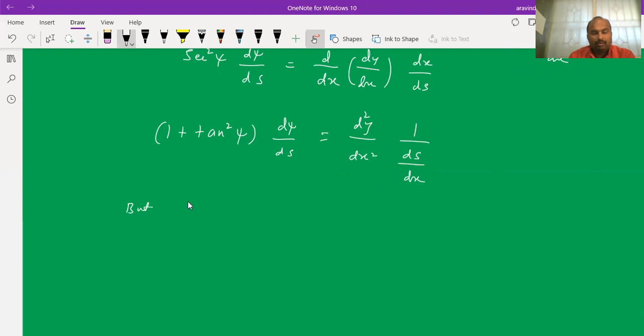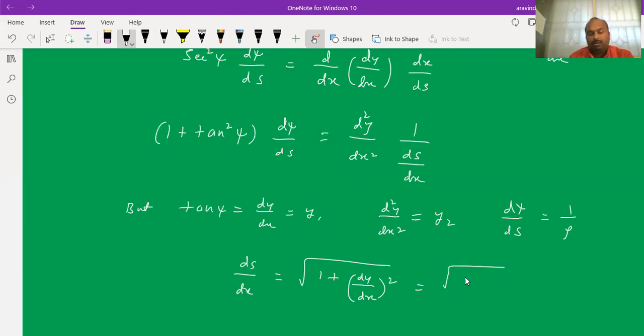What is tan psi? Tan psi is dy by dx, which can be written as y1. Also d square y by dx square is y2. And d psi by ds is 1 by rho. Also ds by dx is square root of 1 plus dy by dx whole square. So dy by dx means we will write y1. This becomes 1 plus y1 square.